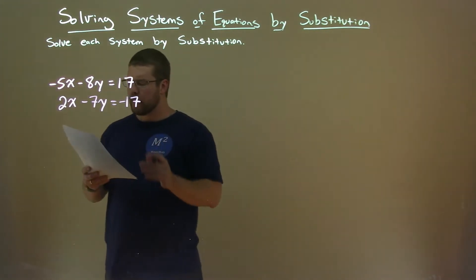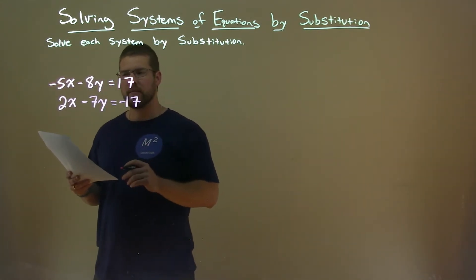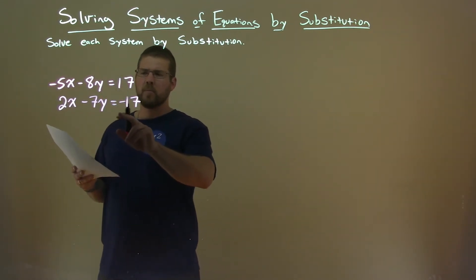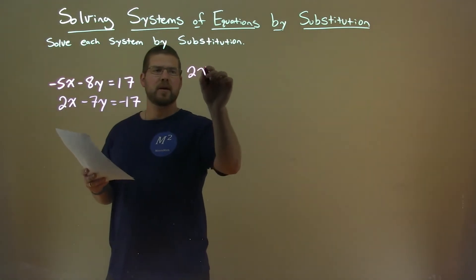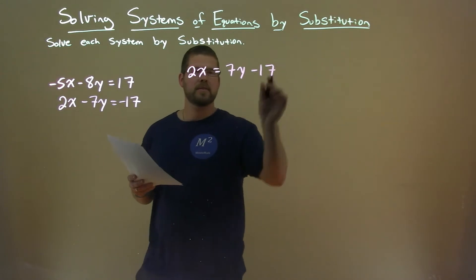Well, I want to get a variable by itself, and the easiest one I think, or easiest way to do it, I think is with the second equation. And I think I can get x by itself fairly easily. So when you take this, to do that I have to add 7y to both sides. So that gives us 2x equals positive 7y - 17.